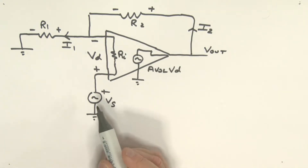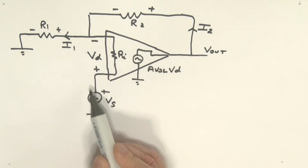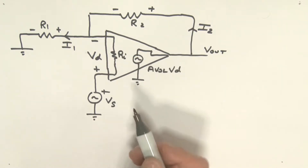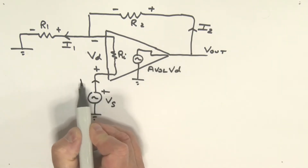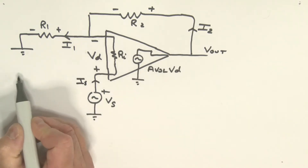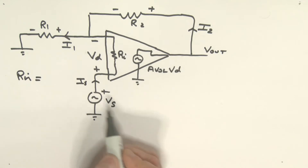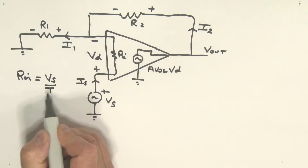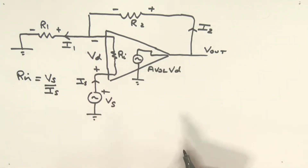What we want to do now is find the input resistance that the signal source sees for this non-inverting amplifier configuration. If we define a current Is, that input resistance Rin is simply equal to Vs divided by Is. We need to find a relationship for that.